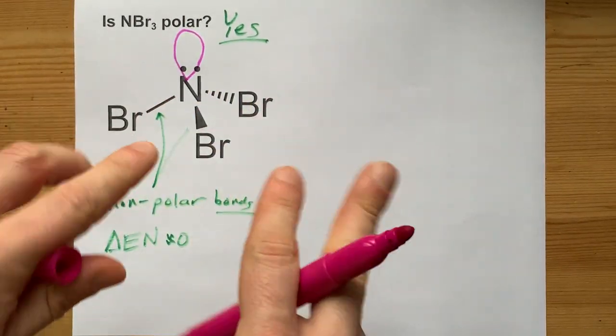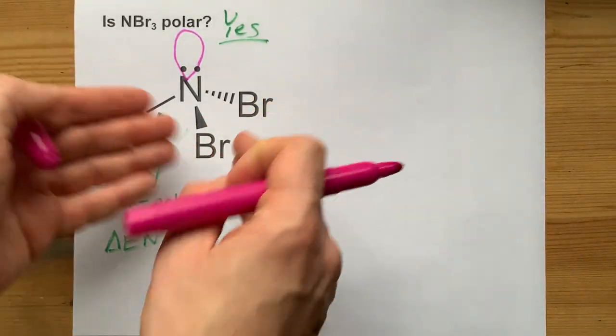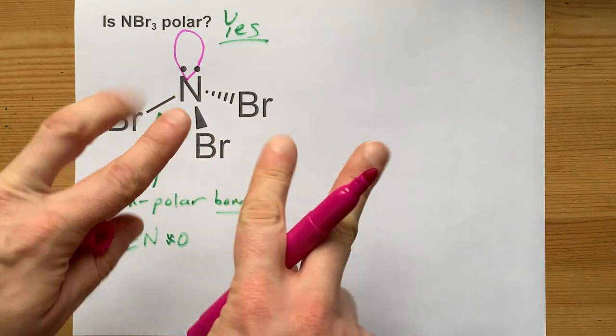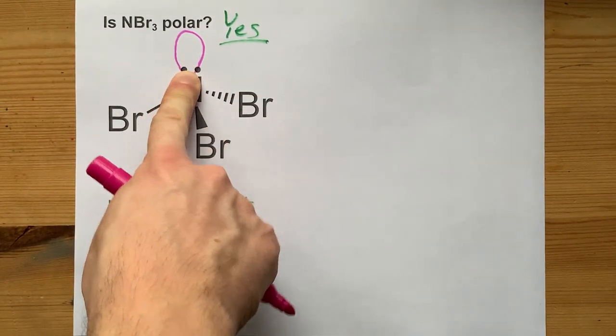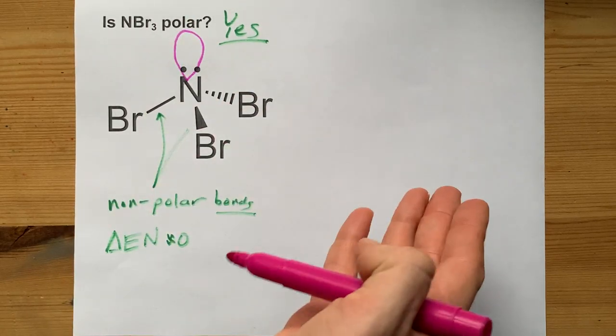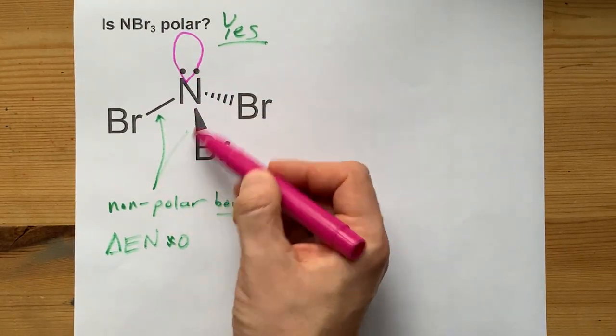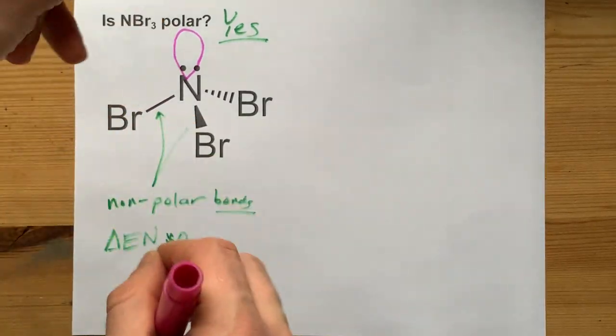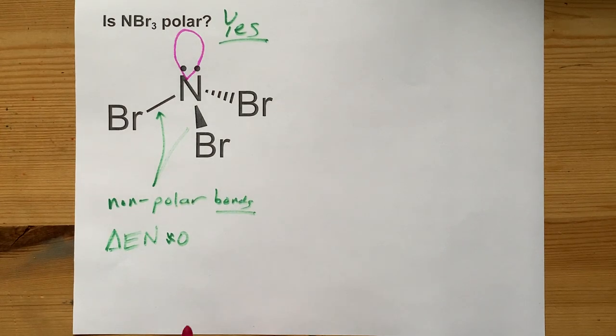These three bromines kind of cancel each other out a little bit, at least in the left-right directions, although they are all pulling downward. But this lone pair here has nothing to cancel out with. There's no other lone pair on the bottom side to cancel out the pull or the negative charge density that that lone pair brings.